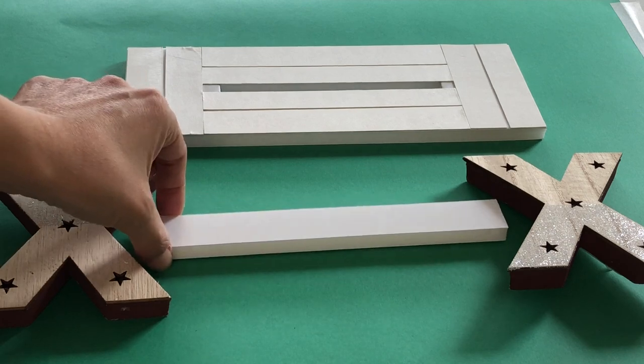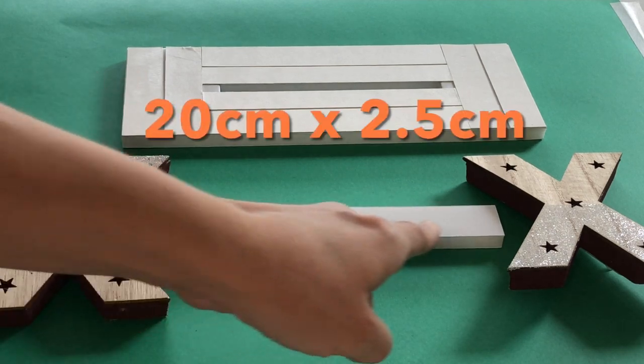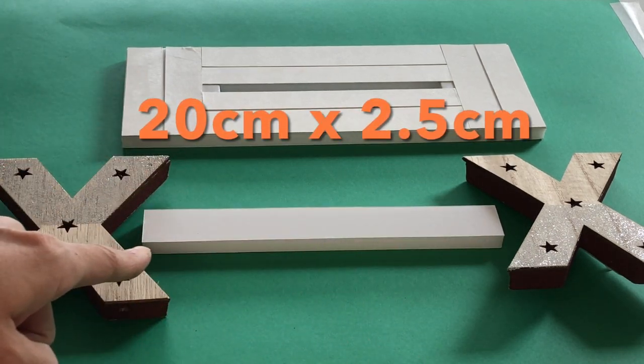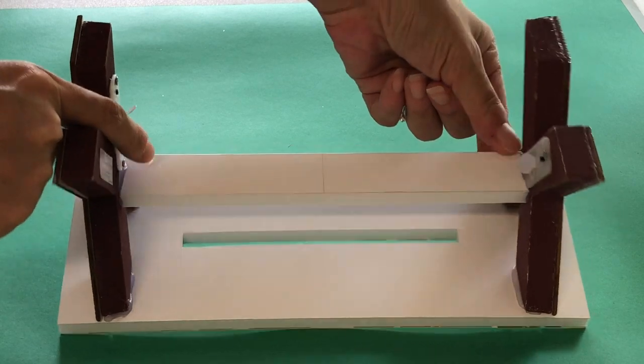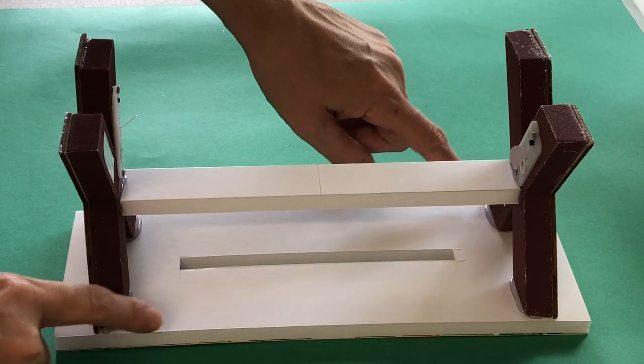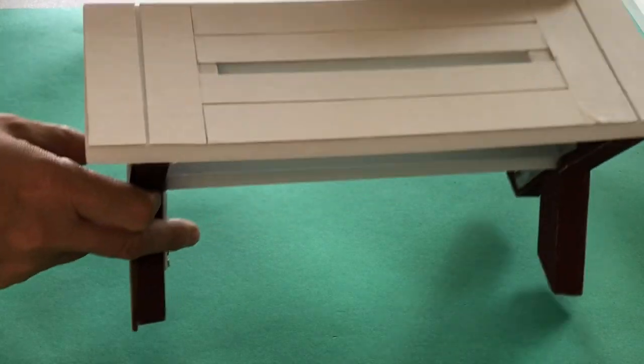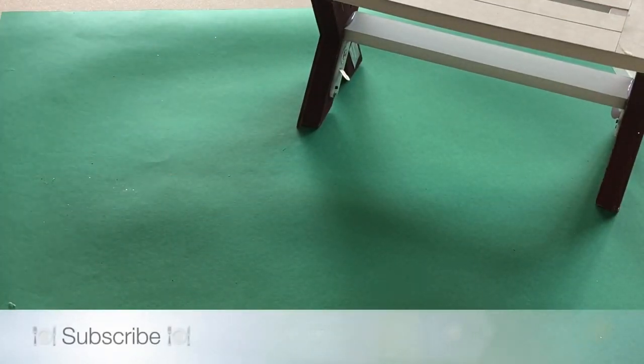Hot glue the beam to the center of two X's then attach this to the underside of the seat. Repeat to make a second bench chair if needed.